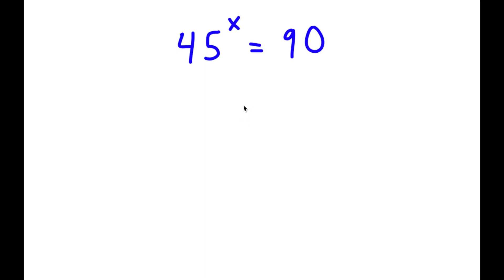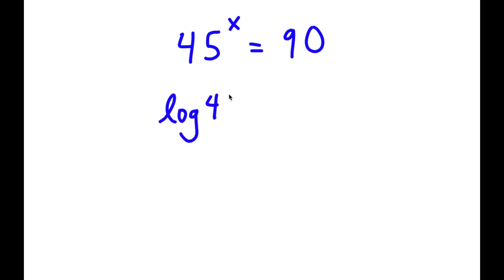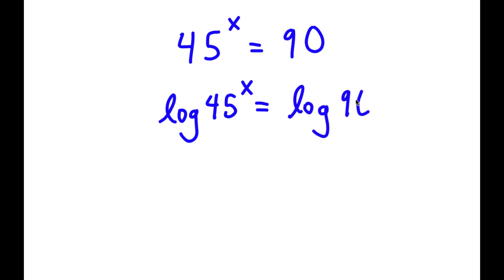In this problem, I have 45 to the power of x is equal to 90. To solve this, I'm going to first start by taking the log on both sides. So now I have log 45 to the power of x is equal to log 90.